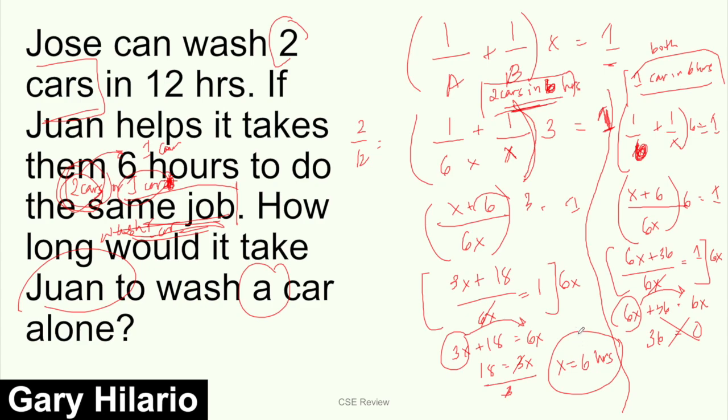If you transfer this to the other side, 6X minus 6X is going to be 0 equals 36. That's impossible. So it's wrong. So it's two cars in 6 hours. Again, it takes a lot of practice and analysis. Try translating the question to Tagalog so you understand it better and become more comfortable with it through practice. So that's the answer to that.